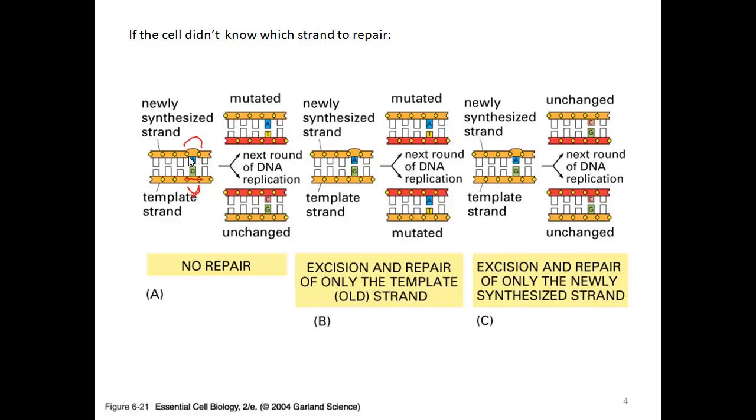In reality, both sides are affected. If you have a C to A mutation after replication, a T will be inserted next to the A and a C next to the G. Going forward, you'd have 50% mutated cells and 50% non-mutated cells.